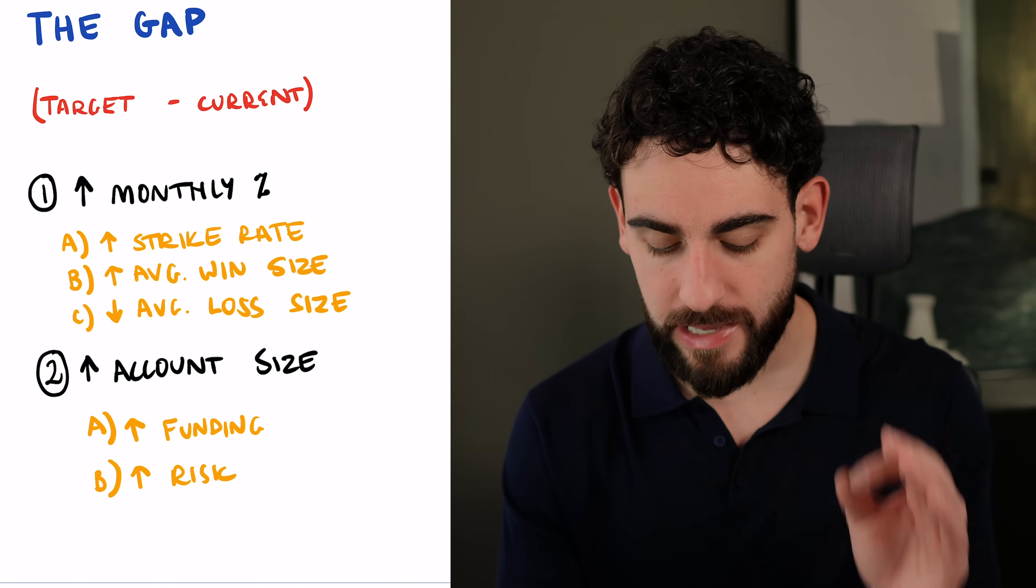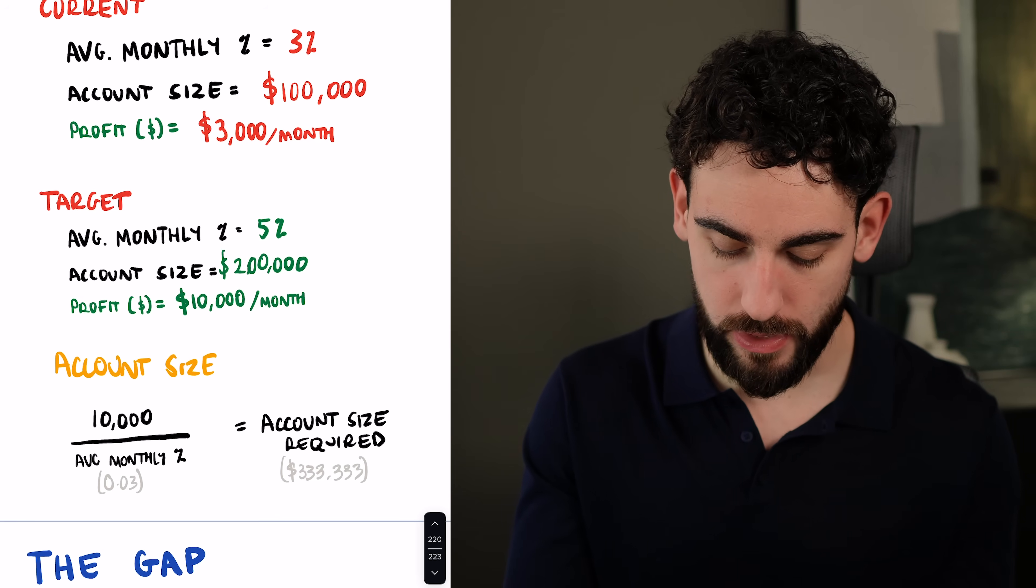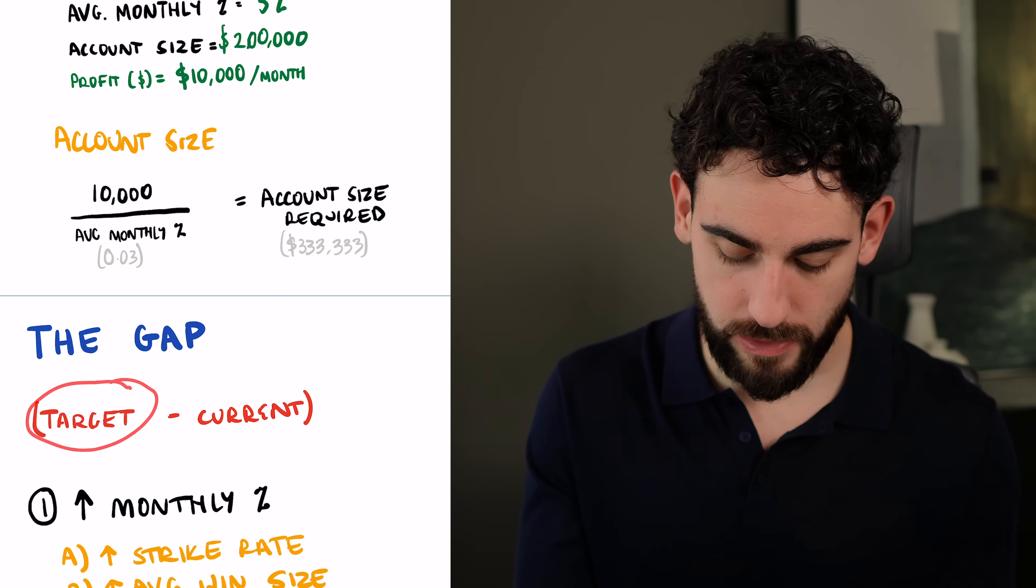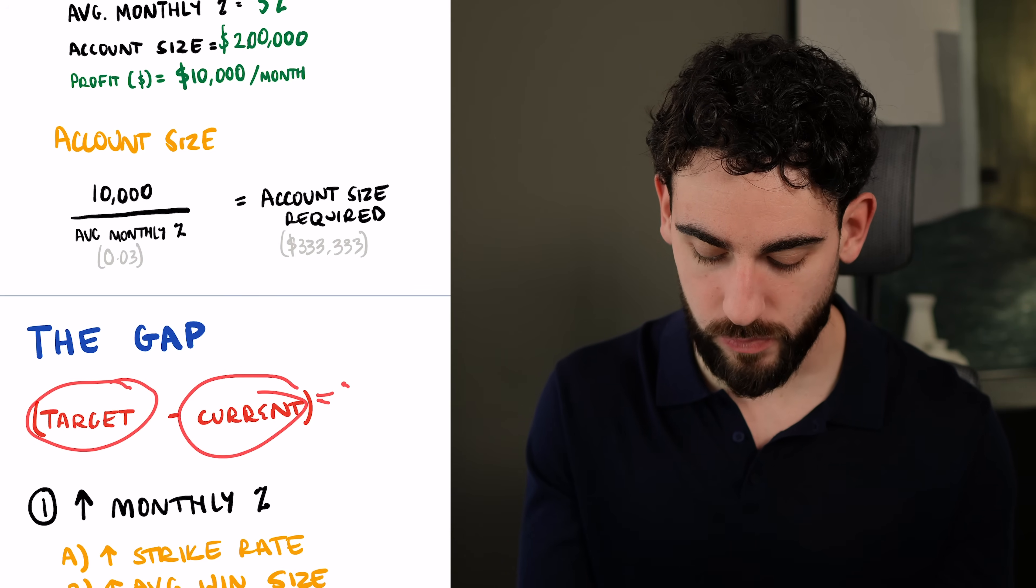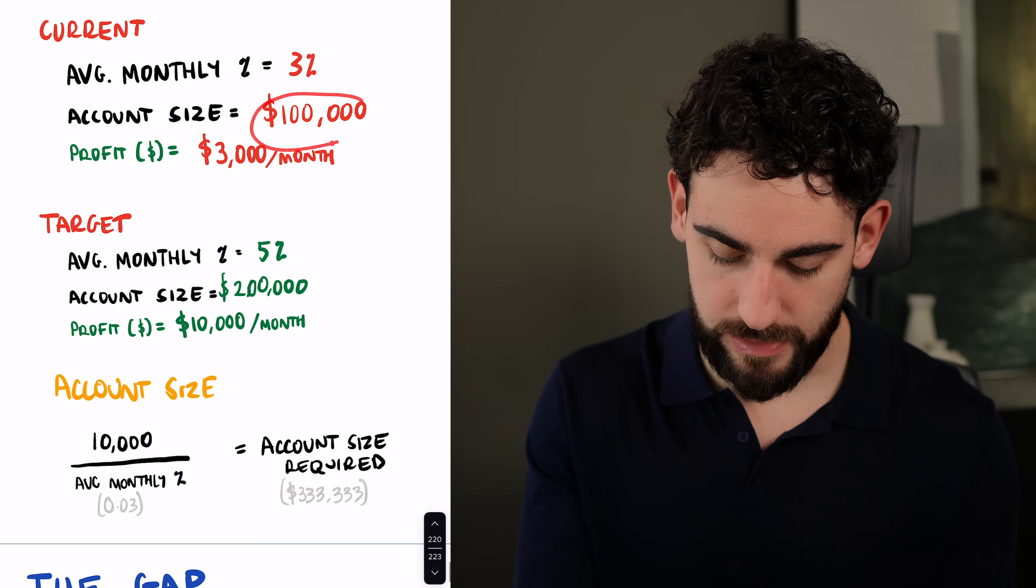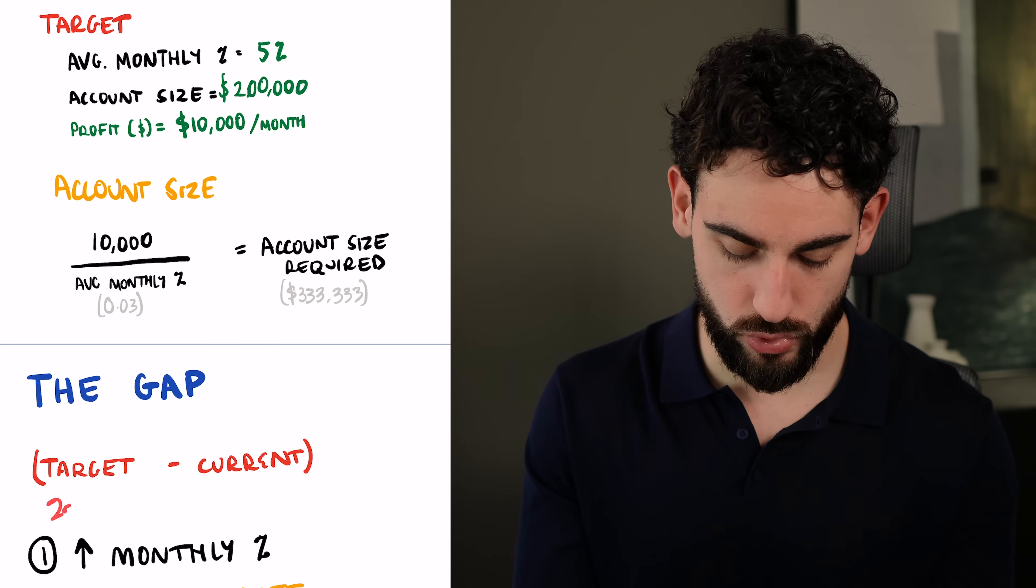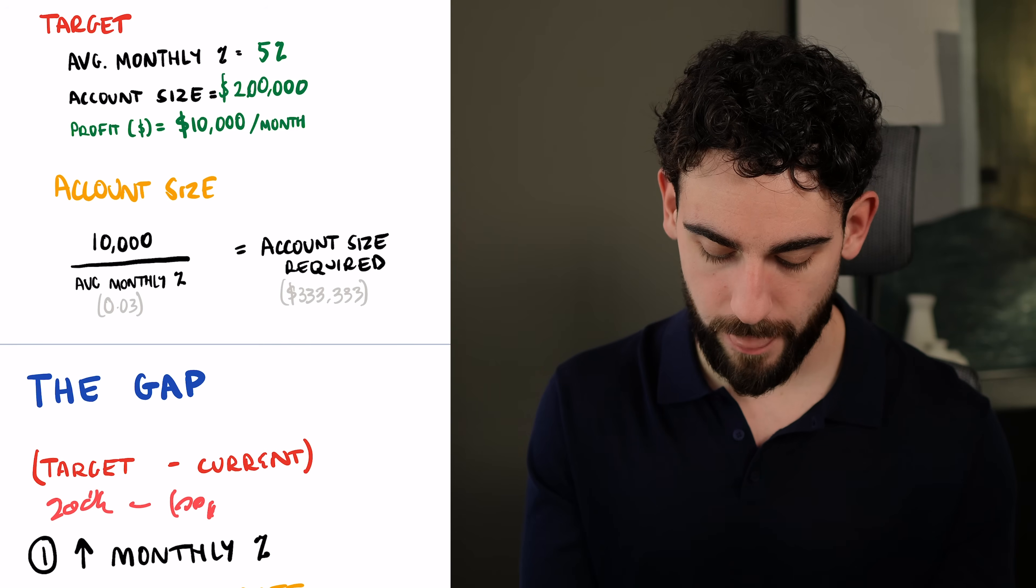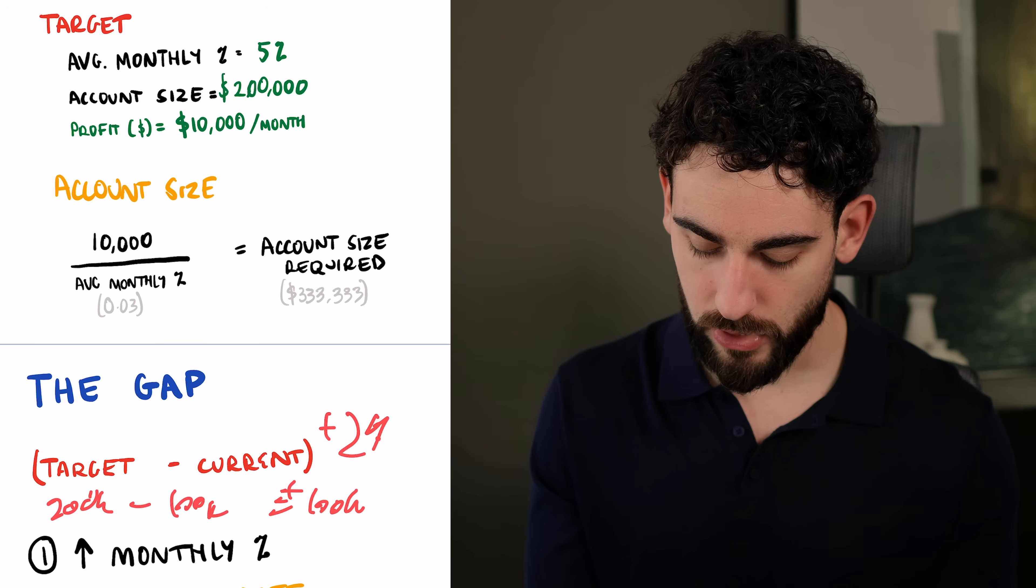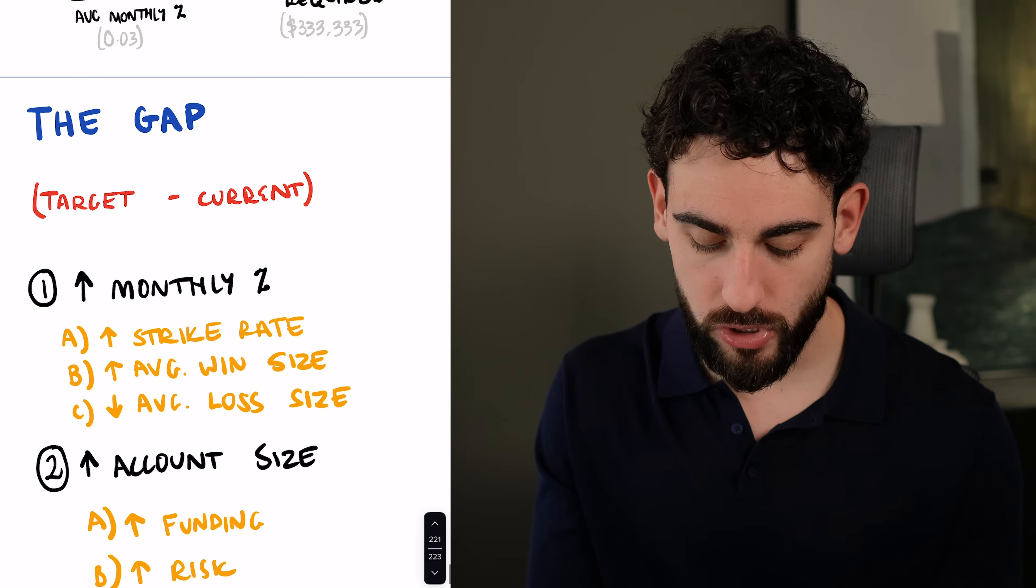Now, then we have to figure out what's the gap. What's your target return? For example, your target return is 5% and your current return is 3%. So you take your target and subtract the current and that's what you need. You need to increase your monthly results by 2%. Or your current account size is $100,000 and your target account size is $200,000, so you need to increase your account size by $100,000.